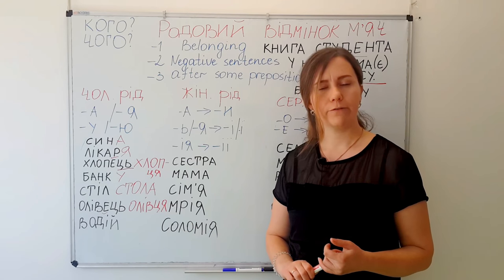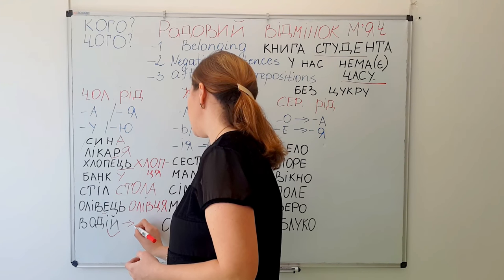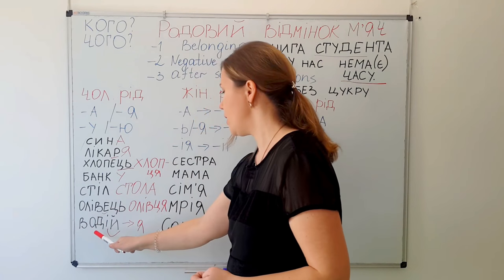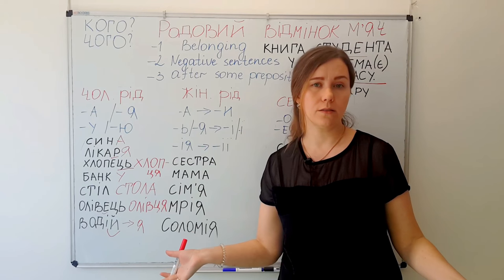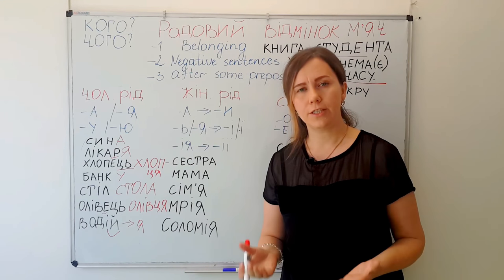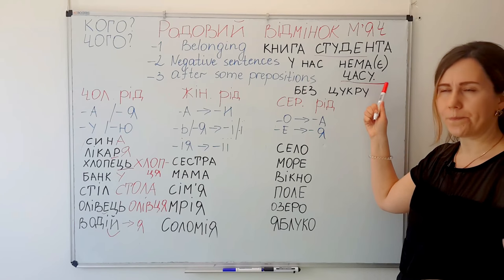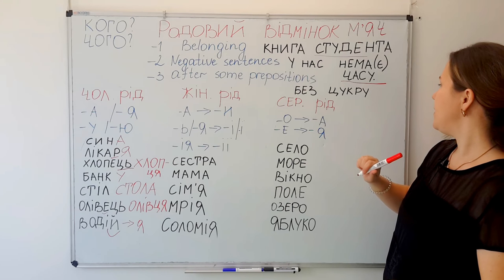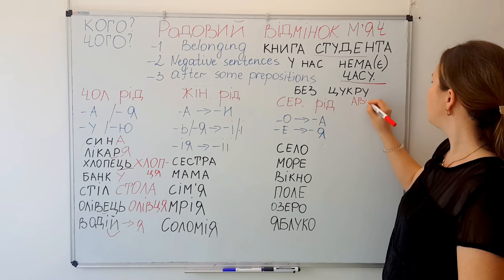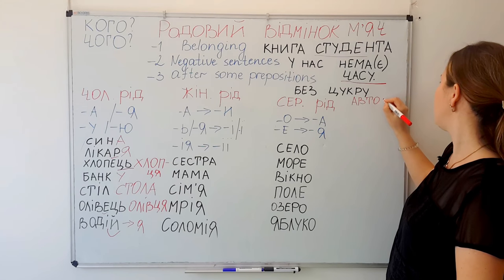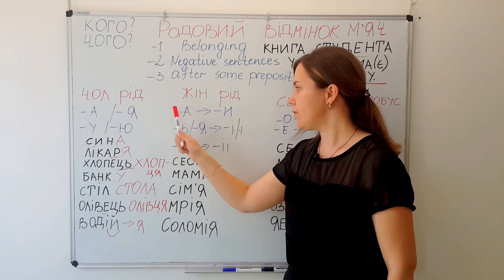Next: водій — 'a driver.' The genitive form is водія. У нас немає водія — 'we have no driver.' Автобус водія — 'a driver's bus.' So водій becomes водія in the genitive case.